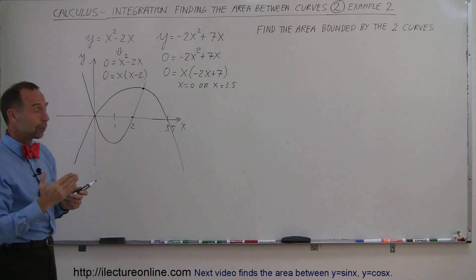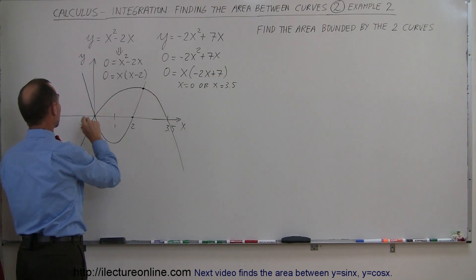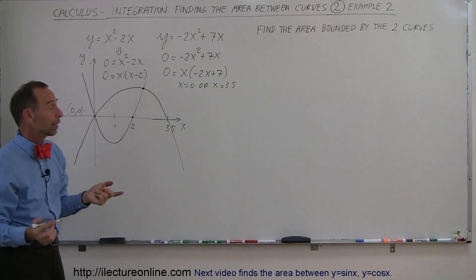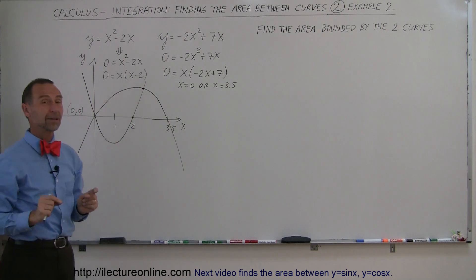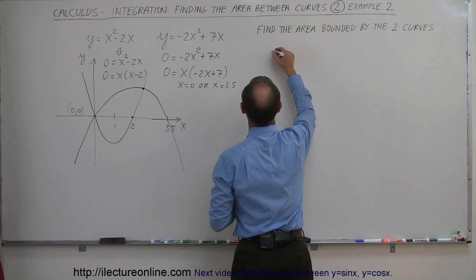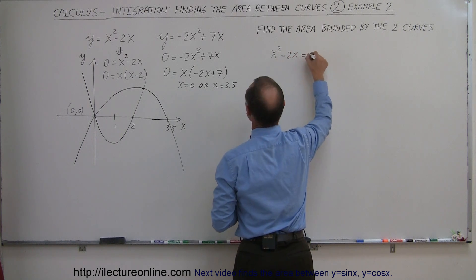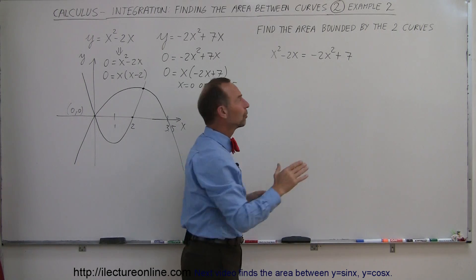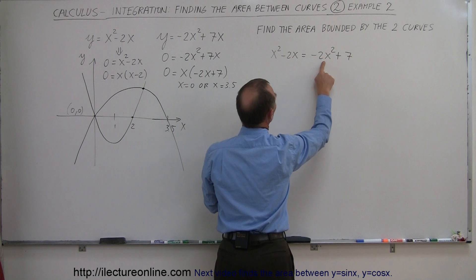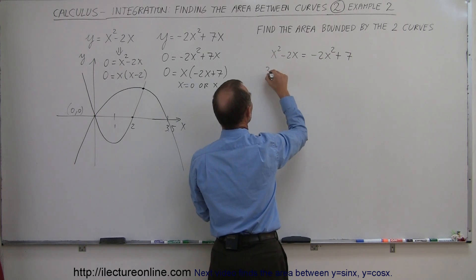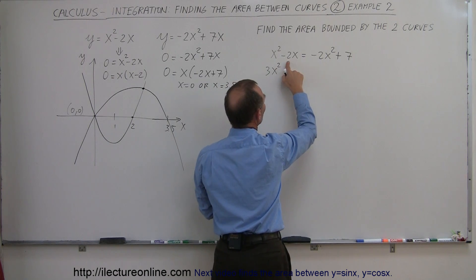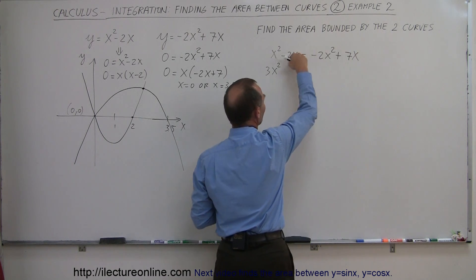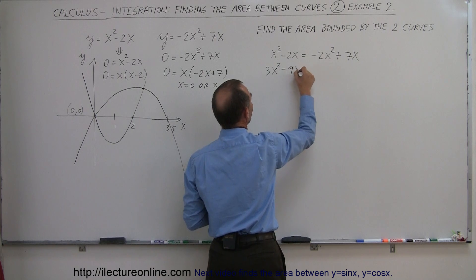In order to figure out the limits of integration, we need to know the points where the curves cross. We can see one intersection is at (0, 0). Now we need to find the other intersection by solving the two equations simultaneously. So we set x squared minus 2x equal to minus 2x squared plus 7x. Moving everything to one side, we get 3x squared minus 9x equals zero.